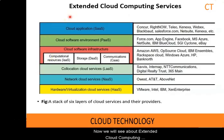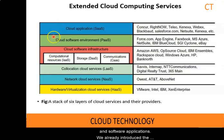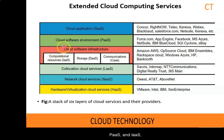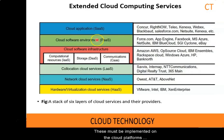Now we will see about extended cloud computing services. This diagram shows six layers of cloud services ranging from hardware, network and collocation of infrastructure, platform and software applications. We already introduced the top three service layers: software as a service, platform as a service, and infrastructure as a service respectively. The cloud platform provides platform as a service, which sits on top of the infrastructure as a service infrastructure. The top layer offers software as a service.